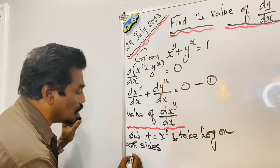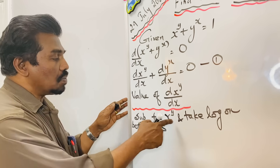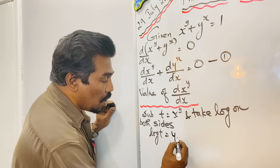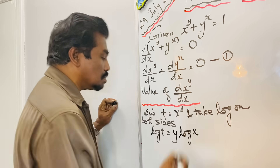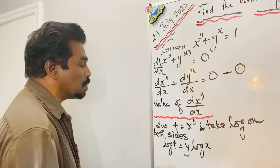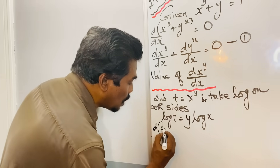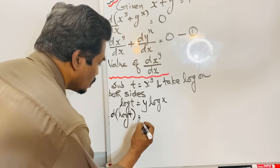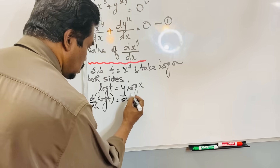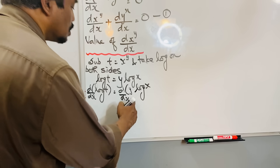When you take log on both sides, it will be log t equal to — using the power rule — y log x. The next step is to differentiate both sides with respect to x. So differentiation of log t with respect to x will be equal to differentiation of y log x over dx. This is the product formula: u·v, so we keep u and differentiate v, plus v differentiate u.